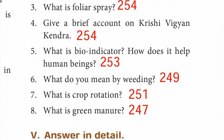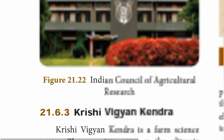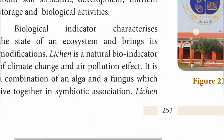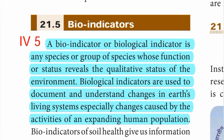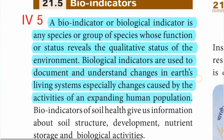Fifth question: what is a bio indicator? How does it help human beings? Page number 253. A bio indicator, or biological indicator, is any species or group of species whose function or status reveals the qualitative status of the environment. Biological indicators are used to document and understand changes in Earth's living systems, especially changes caused by the activities of an expanding human population.